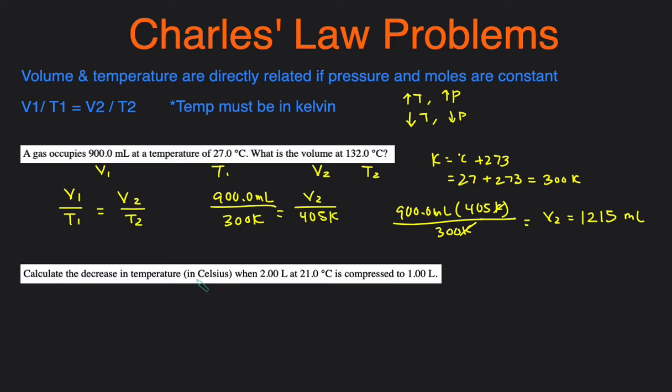So this one says calculate the decrease in temperature. So we're solving for temperature, and we're given the volume, another temperature, and then another volume. So let's associate what's 1 and what's 2. Well, these two are associated together, because it says that it's 2 liters at 21 degrees Celsius. So we'll call that 1, and then we'll call the other condition 2. So again, we're going to use Charles' Law. V1 over T1 equals V2 over T2.